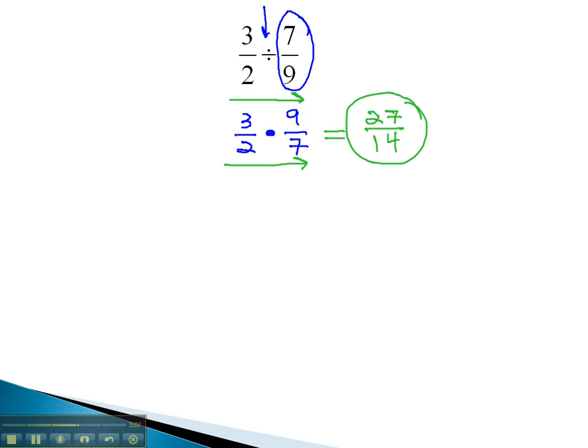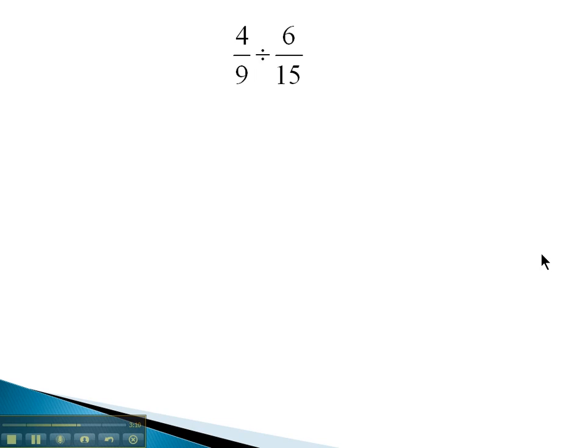Let's try another example where we divide by actually multiplying by the reciprocal. In this problem, we have 4 ninths divided by 6 over 15. Again, with division, we're gonna multiply by the reciprocal of that second fraction, 4 ninths times 15 over 6.